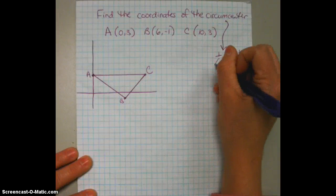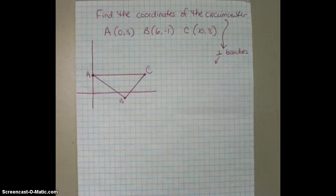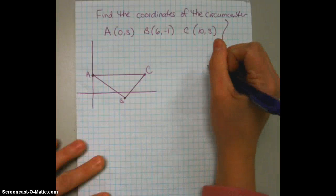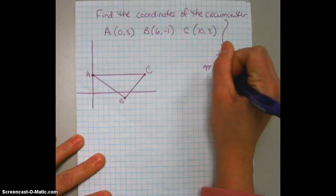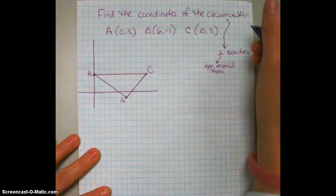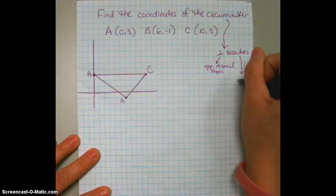The fact that we have perpendiculars and bisectors. Perpendicular lines, we should be thinking about slopes. For perpendicular, we should be thinking about opposite reciprocal slopes. When we're talking bisectors, we should be thinking about midpoints.